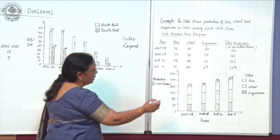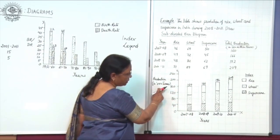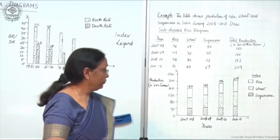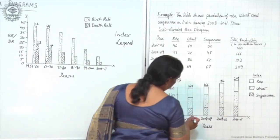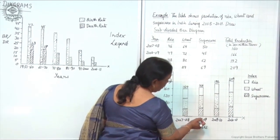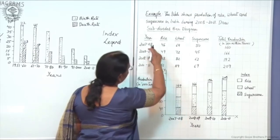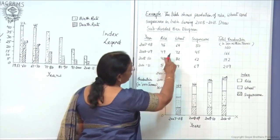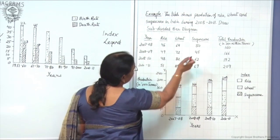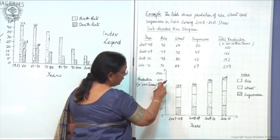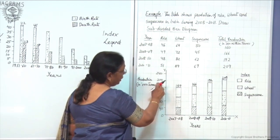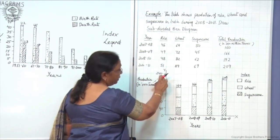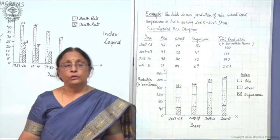Now let us see how. The Y-axis shows production in 1000 tons and the X-axis shows years. You can divide the X-axis as 2007-08, 2008-09, 2009-10, 2010-11 because four years are described. Divide the Y-axis according to the highest figure, which is 209. I have taken till 240 at an interval of 40, since there is no need to go beyond 240.